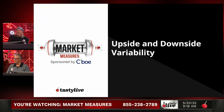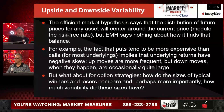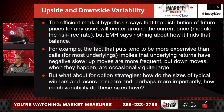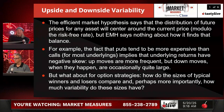Let's take a look at upside and downside variability. The efficient market hypothesis says the distribution of future prices for any asset will center around the current price, but efficient market theory also says nothing about how it finds the balance. For example, the fact that puts tend to be more expensive than calls for most underlyings implies that the underlying returns have negative skew — up moves are more frequent, but down moves when they happen are occasionally quite large.